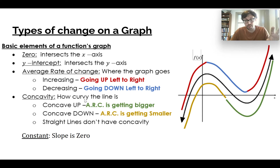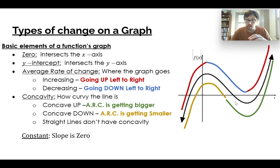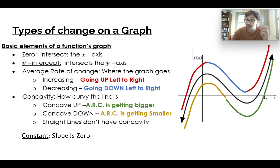Concavity is separate from either increasing or decreasing. Concave up is where we are getting a bigger and bigger average rate of change as we go along. We start out with a negative average rate of change, then it becomes a positive average rate of change.